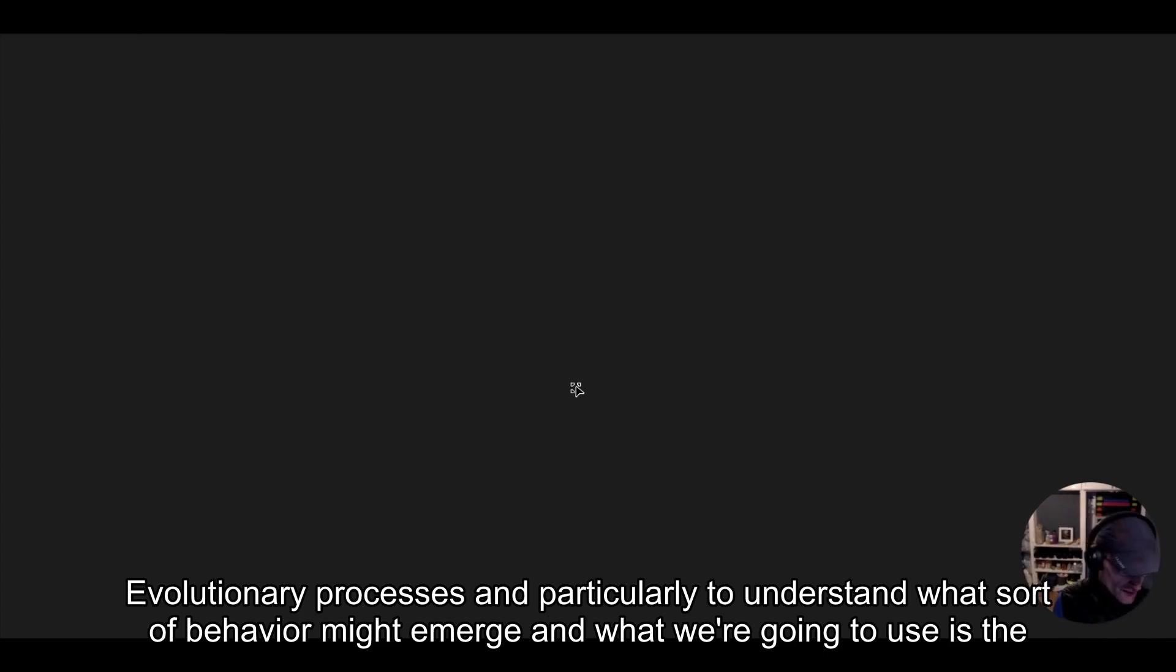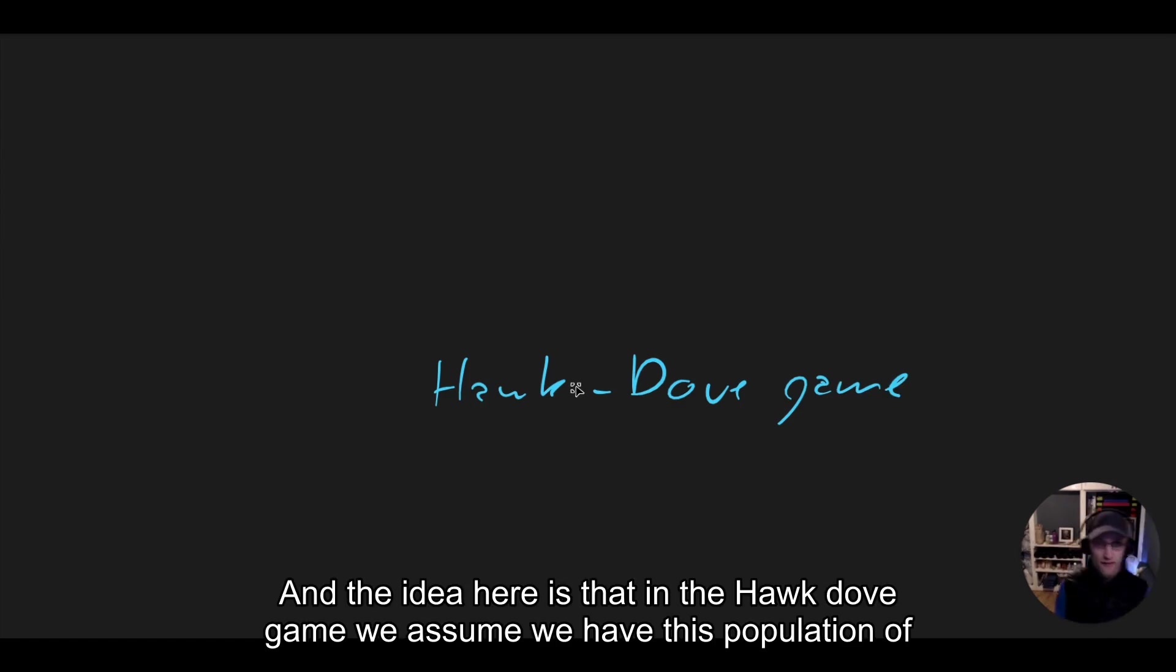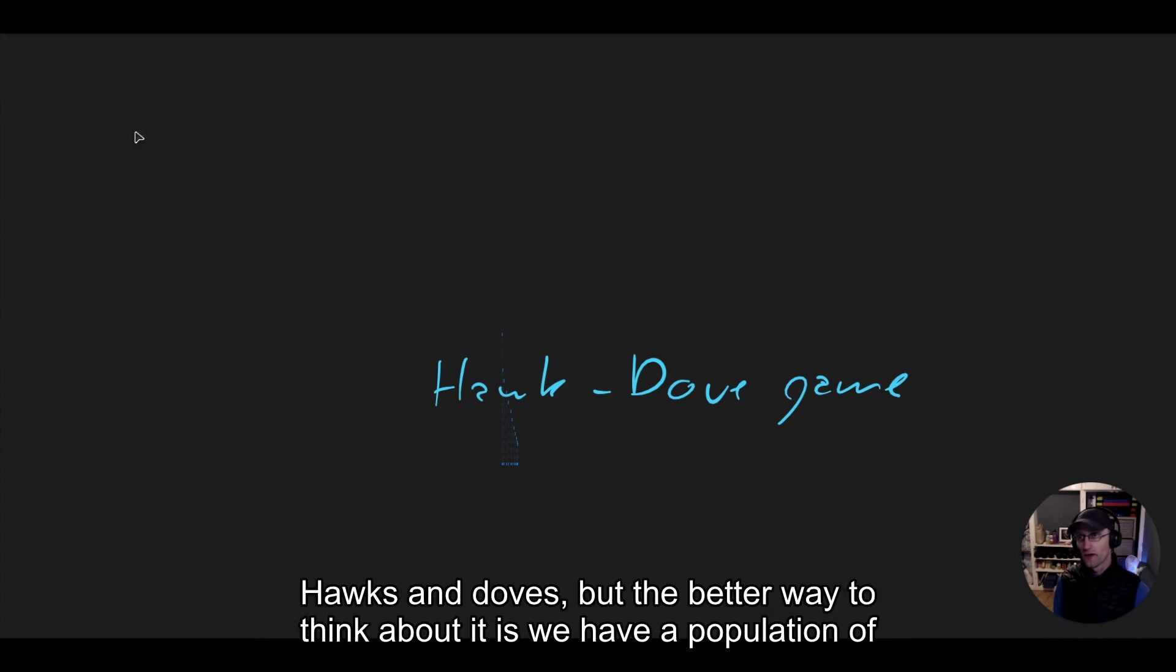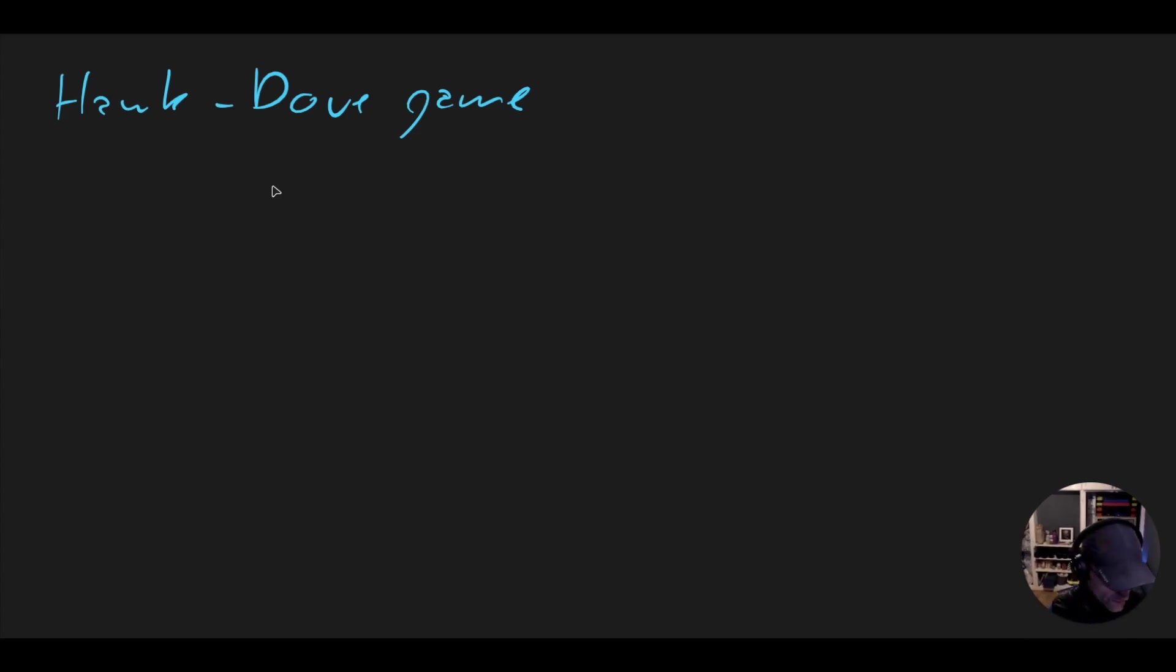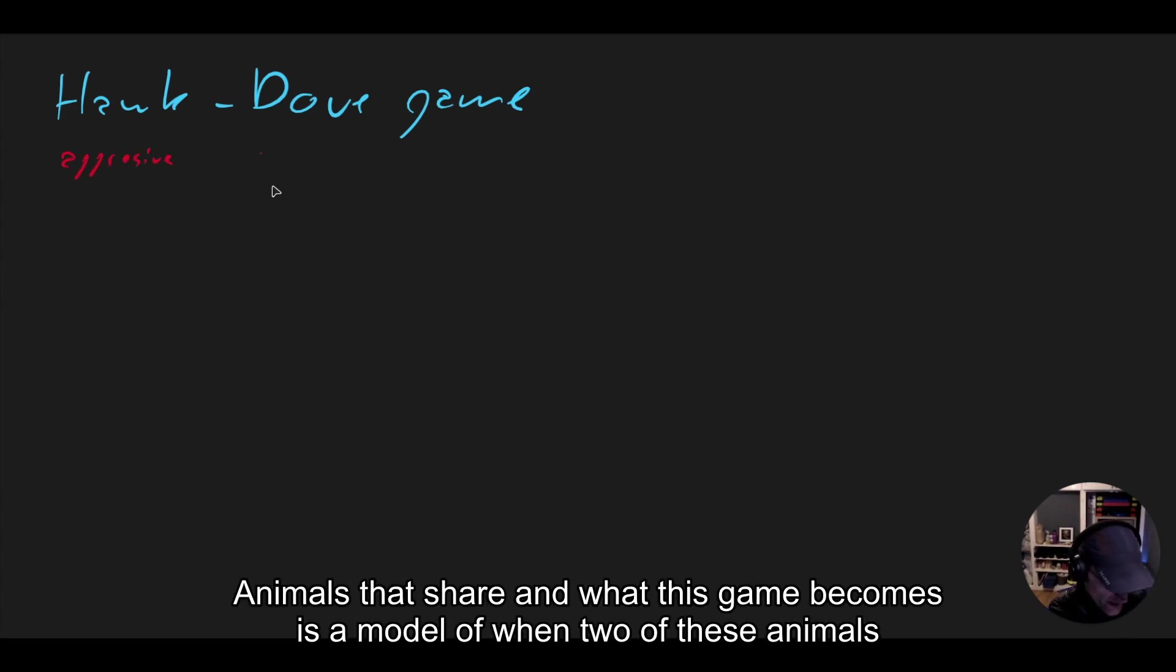And what we're going to use is a famous game called the Hawk-Dove Game. And the idea here is that in the Hawk-Dove Game, we assume we have this population of hawks and doves, but the better way to think about it is we have a population of aggressive animals or animals that share.